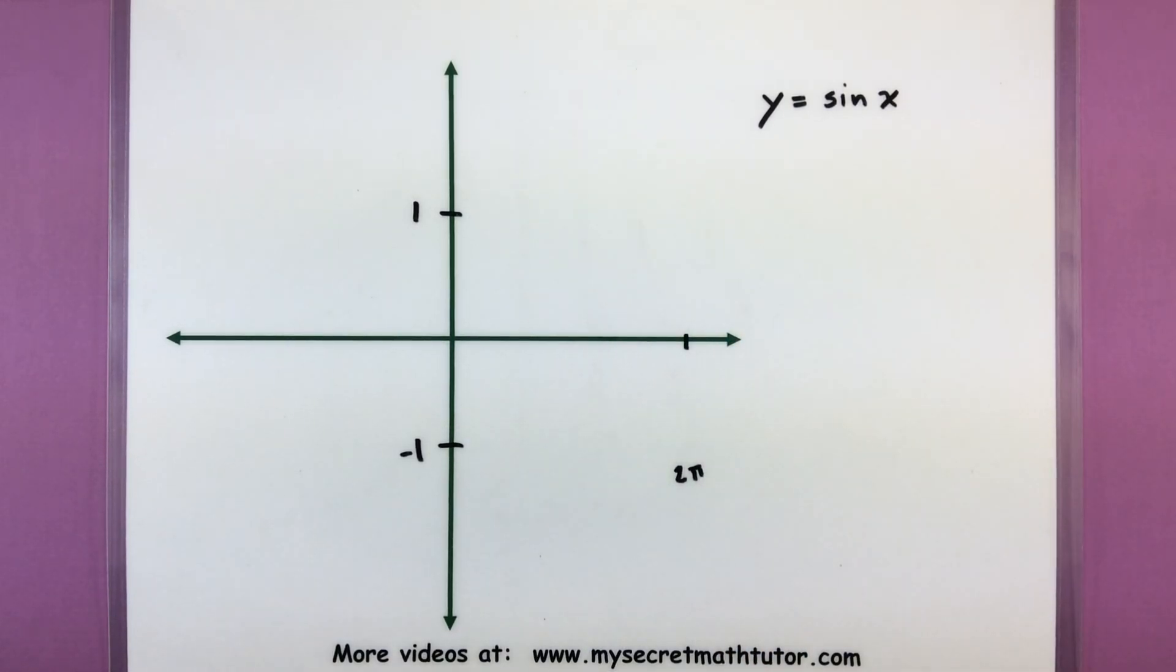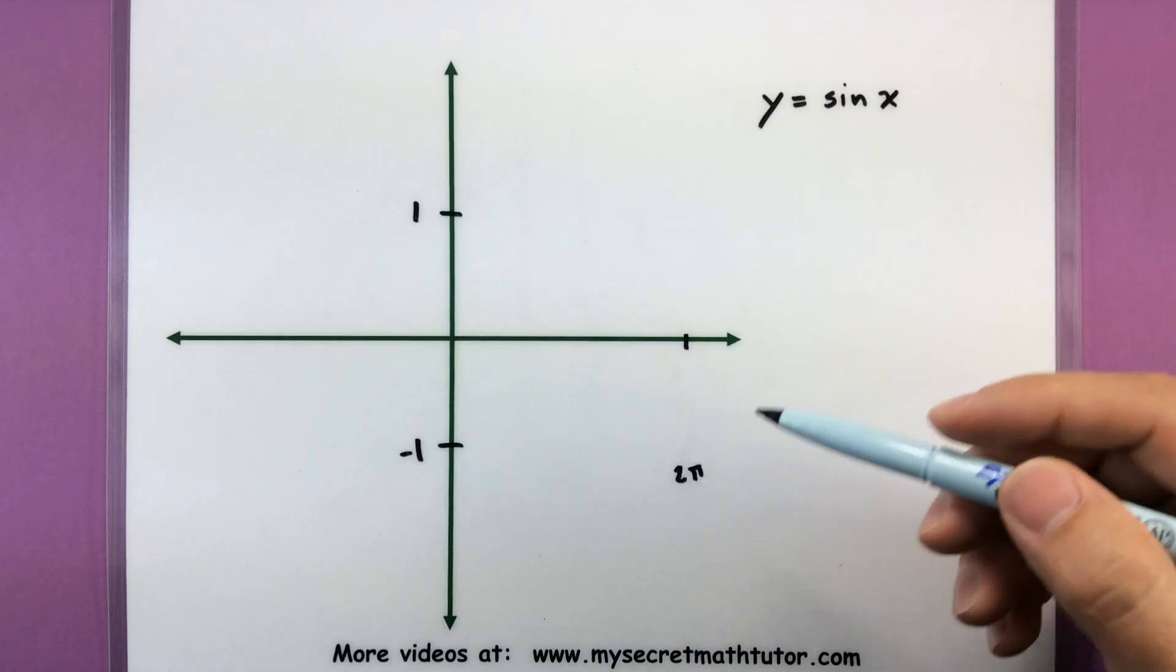Now it's important to note that the graph of sine doesn't really start or stop anywhere. It actually continues in both directions, but I would like to start off graphing one period, and then you'll see that we can extend that as far as we want.